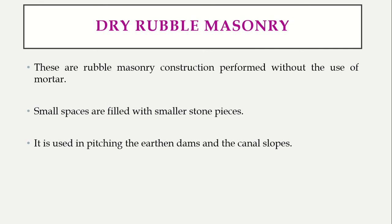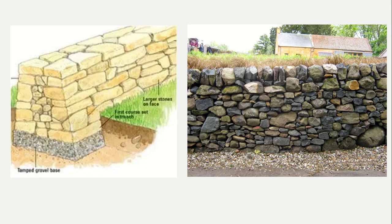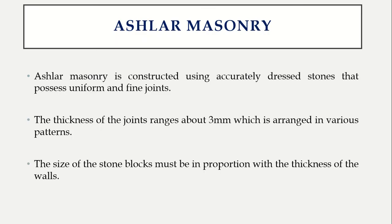Dry rubble masonry involves rubble masonry construction performed without the use of any mortar. Instead of mortar, the bond is created with the help of small stone pieces — if you have two stones with a gap, you fill it with small stones rather than mortar. In villages, walls are commonly built this way with no mortar at all.